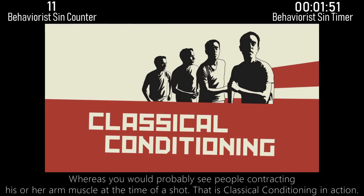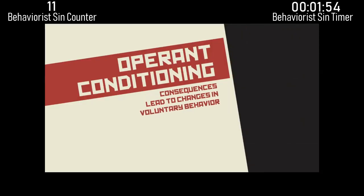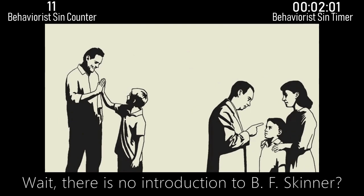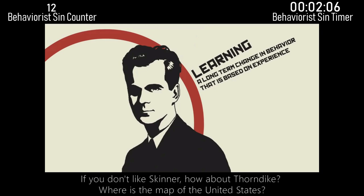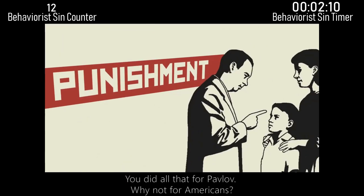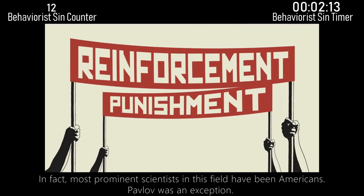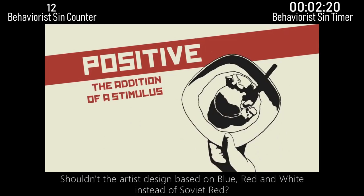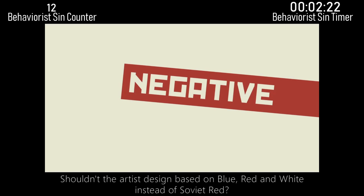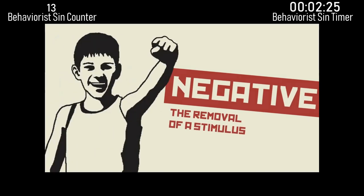Operant conditioning explains how consequences lead to changes in voluntary behavior. So how does operant conditioning work? Wait — there is no introduction to B.F. Skinner. You even showed his picture at the beginning of your video. If you don't like Skinner, how about Thorndike? Where is the map of the United States? You did all that for Pavlov — why not for Americans? In fact, most prominent scientists in this field have been Americans; Pavlov was an exception. Shouldn't the artist design be based on blue, red, and white instead of Soviet red?